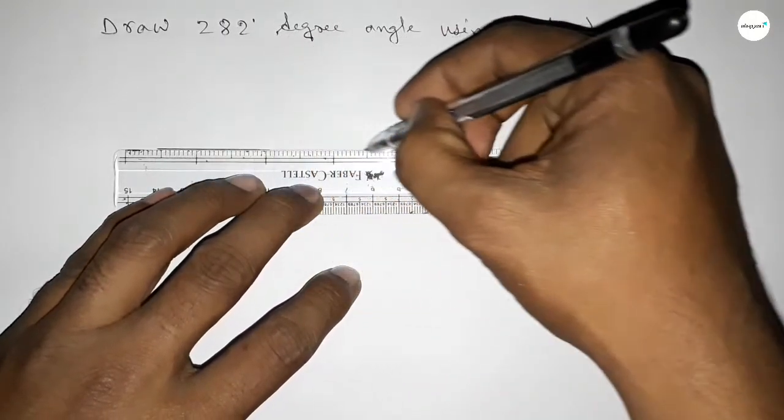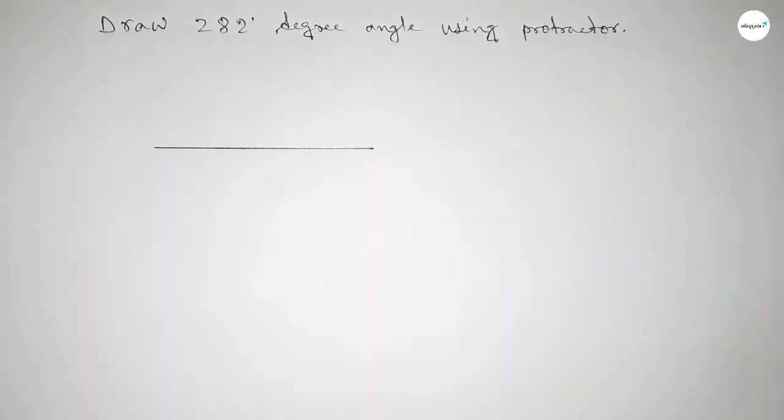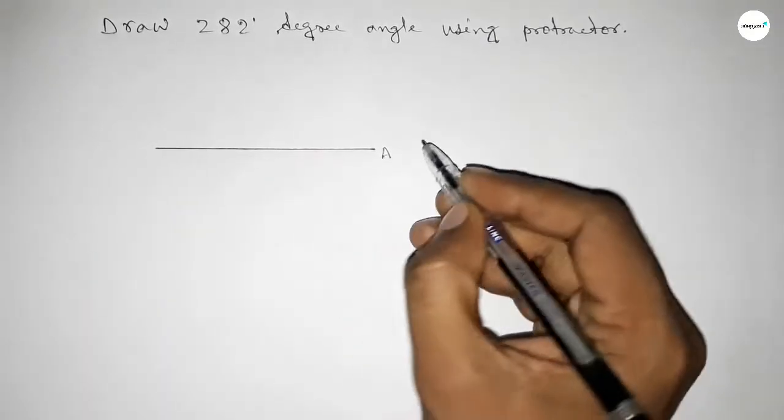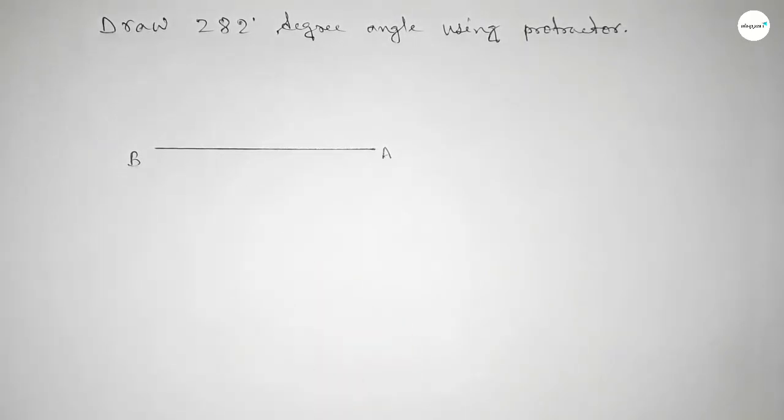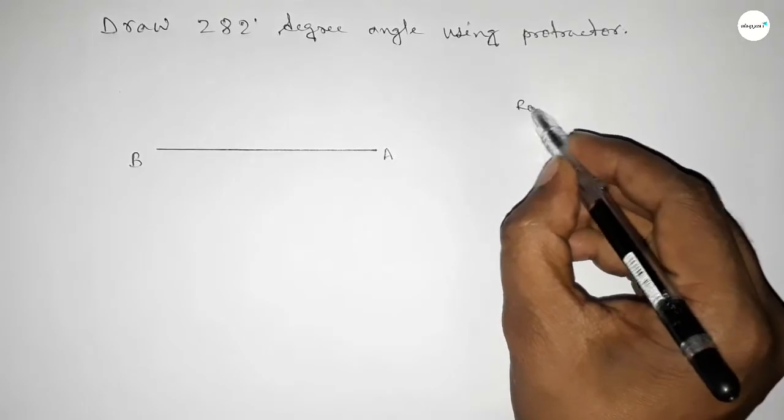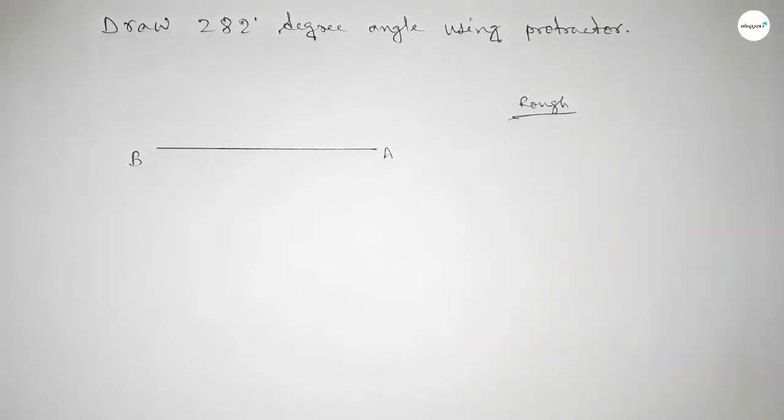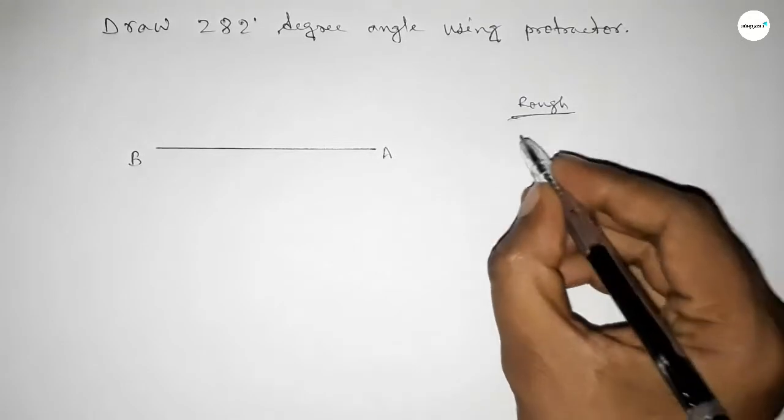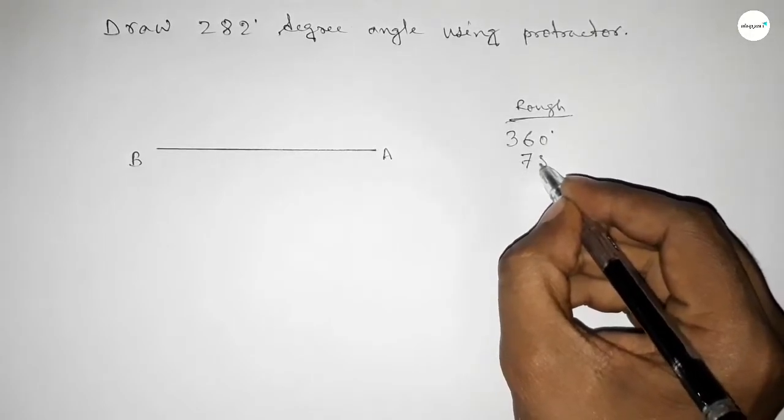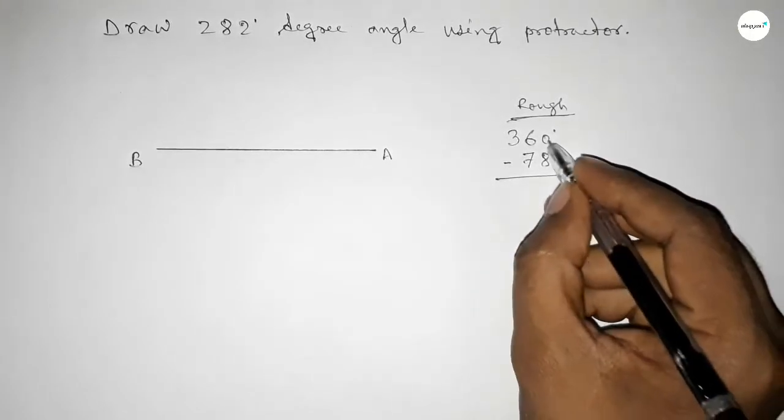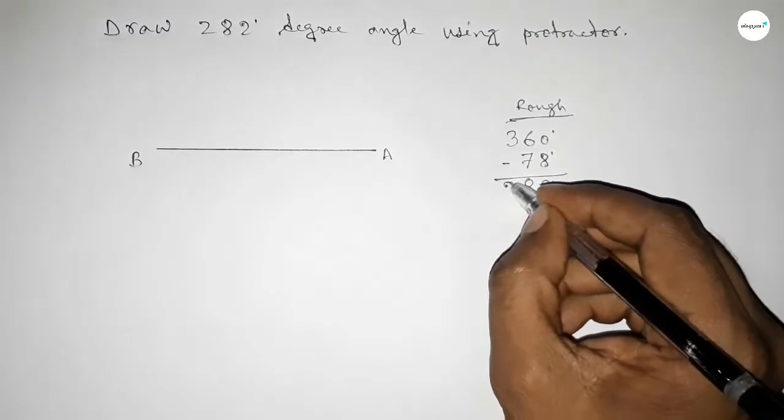First, drawing a line of any length. Next, taking this end as point A and this end as point B. Now discussing some important calculations. If we subtract a 78-degree angle from 360 degrees, then we can get 282 degrees. So 360° - 78° = 282°.